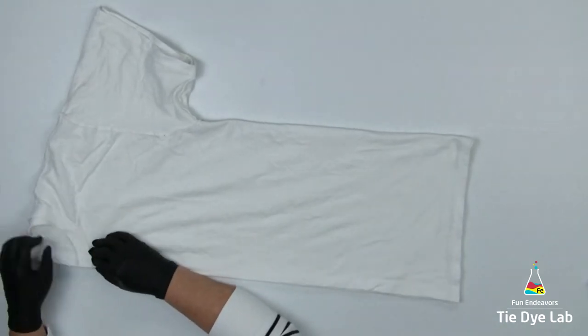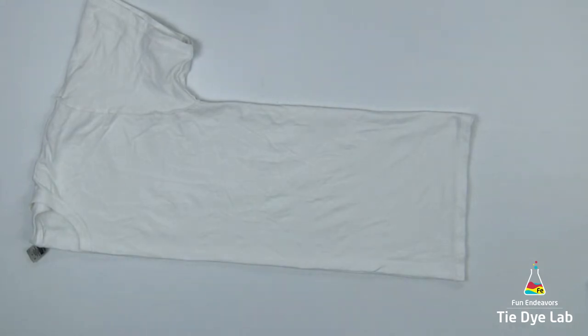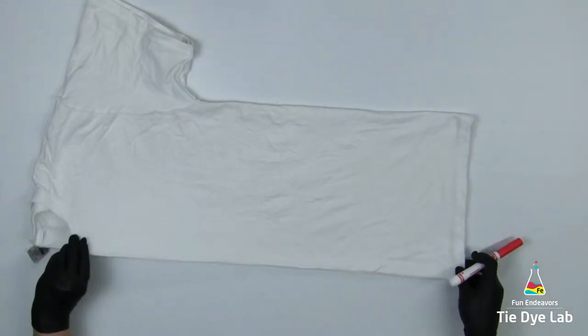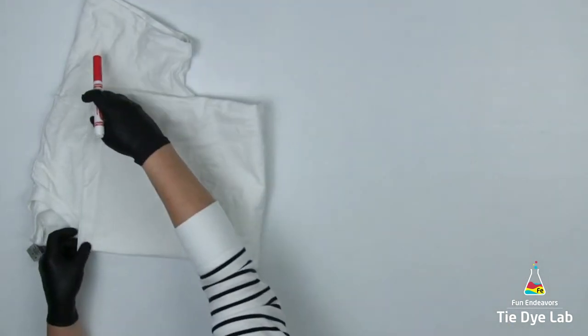To begin I'm going to fold the bottom of the shirt up to the top just to kind of find the middle of the shirt. I want the hearts to be closer to the top so I just want to make sure I don't put them a little too low on the shirt.